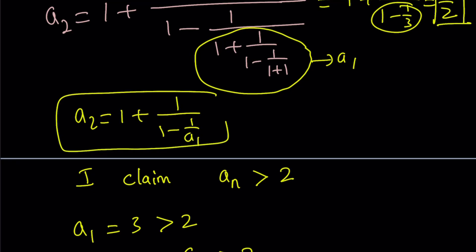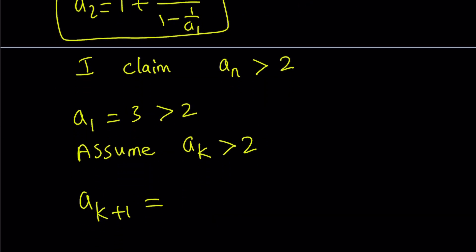This is actually going to help you to write a sub k plus 1 because it's going to look like the following: 1 plus 1 over 1 minus 1 over a sub k. All you have to do is replace a sub 1 with a sub k and a sub 2 with a sub k plus 1.